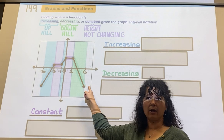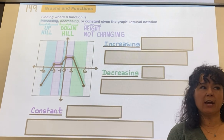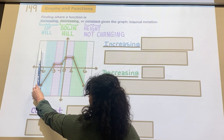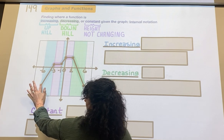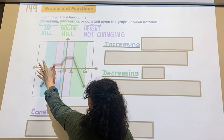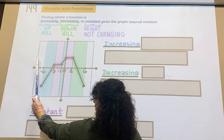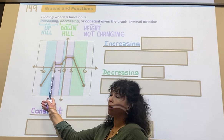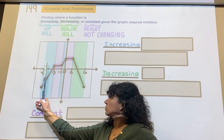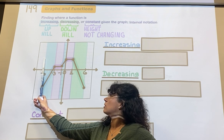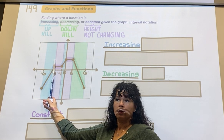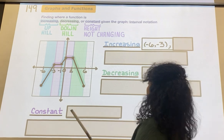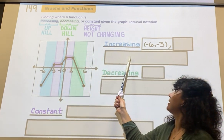But how we write our answer is off the x-axis. If I start, where is this located? Do you see how it's located between negative 6 and negative 3? I'm coming off the x-axis. Make sure you look closely at that. From negative 6 through negative 3, the first part of the increasing is from negative 6 through negative 3. That's not a coordinate.